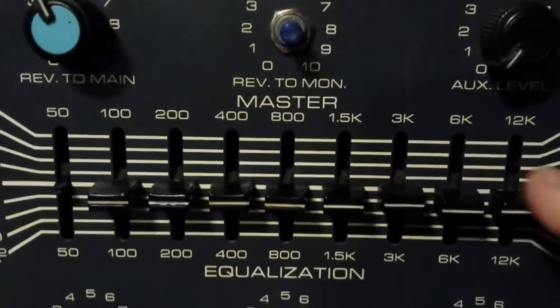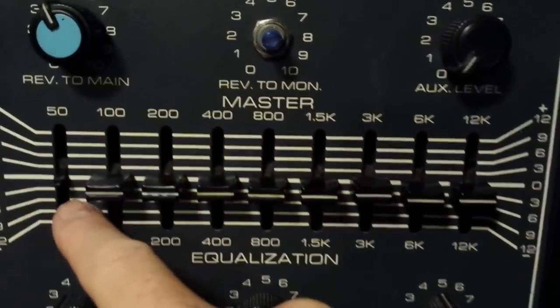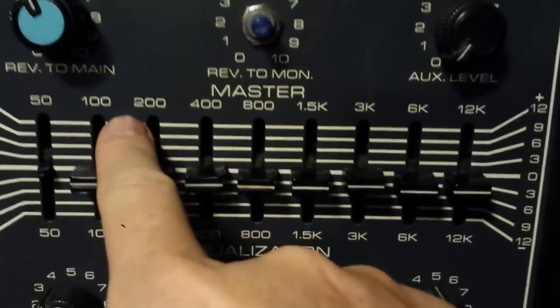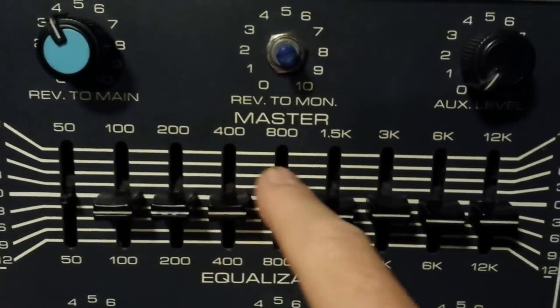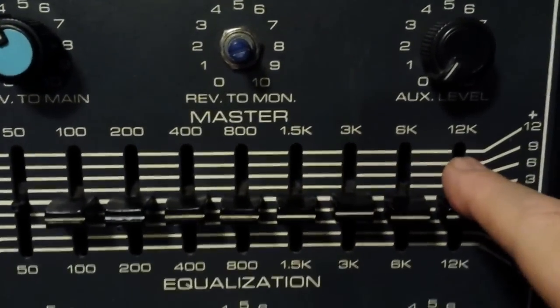And that's basically if we look at this EQ here on this really old PA head, probably from sometime in the 80s, you can see that there are numerical numbers to the frequencies on the EQ here: 50, 100, 400, 1000, 1500, 3K, 6000, 12,000.